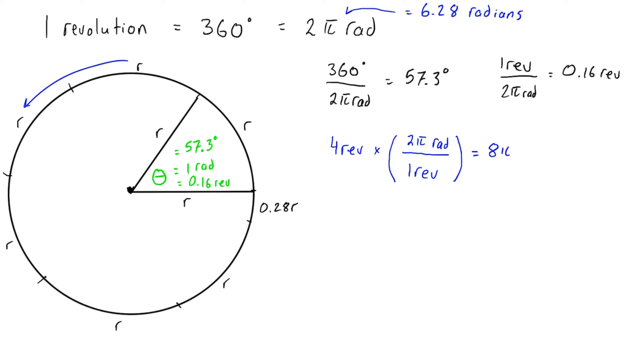Four times 2π divided by one is equal to 8π radians, because revolution here cancels out with revolution there. You can get rid of the π if you want—it would be about 25.1 radians—but anytime you're able to leave the π in, it's recommended.